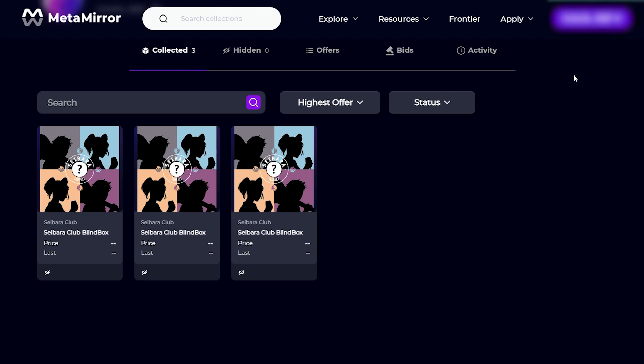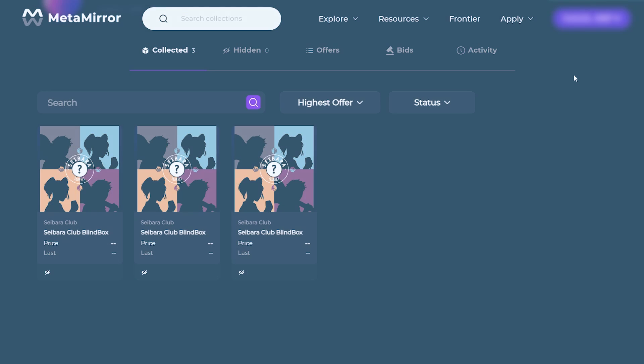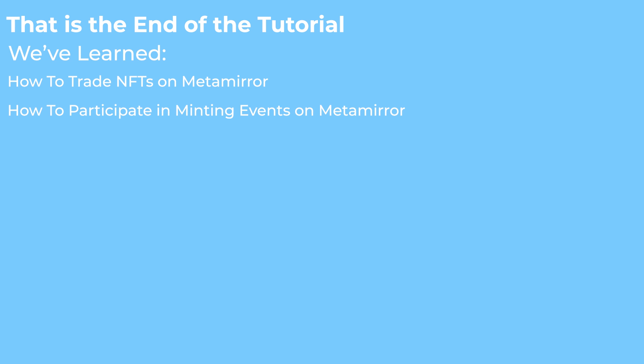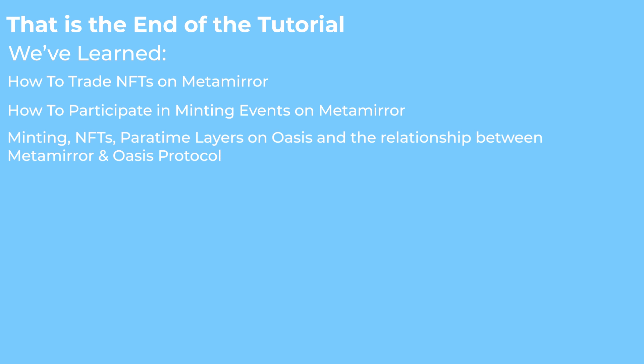The public sale is no different — the public mint allows us to mint as many NFTs as we'd like, and we'd only have to pay more for the NFTs. So this brings us to the end of this tutorial. We've been able to understand how to buy and sell NFTs on MetaMirror and how to participate in minting events for upcoming projects. We also learned some technicalities about minting, NFTs, Paratime layers on Oasis, and the relationship between MetaMirror marketplace and the Oasis protocol. I hope this tutorial was very helpful. See you soon.